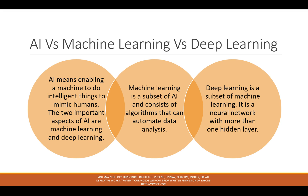Deep learning is a subset of machine learning — it is a neural network with more than one hidden layer.